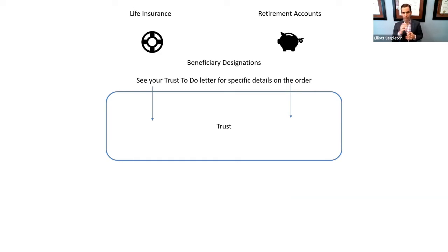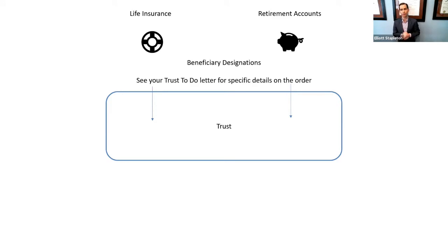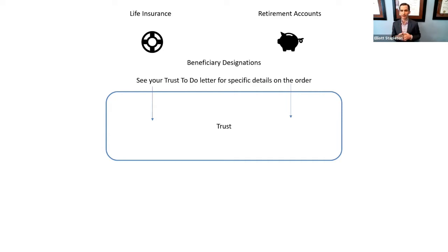When you created your estate plan, there is a to-do list you would have received. It's usually in the front pocket of your binder, and it's in the form of a checklist. That checklist is important to reference when funding your trust, because it has the name of the trust and specifics. While these videos generally discuss how to fund your trust, each estate plan might have some unique facets addressed in that checklist.